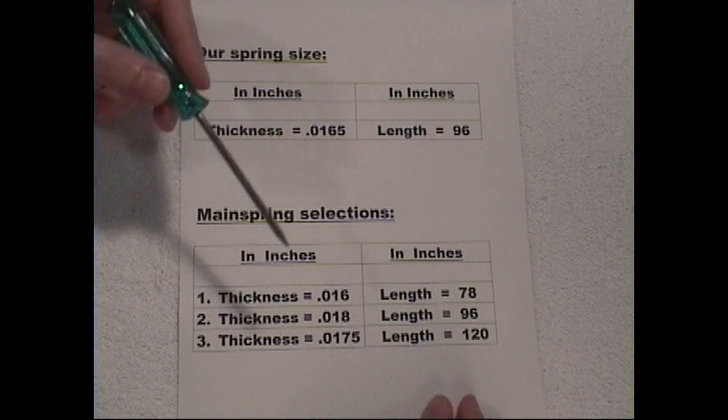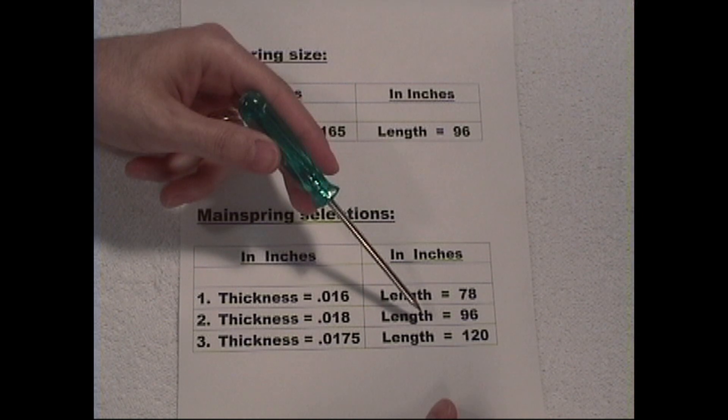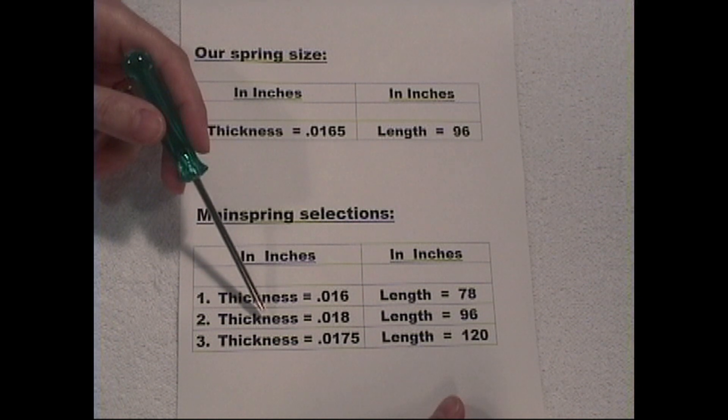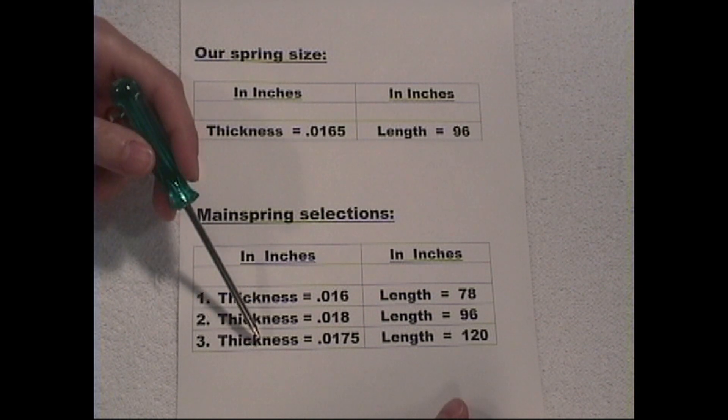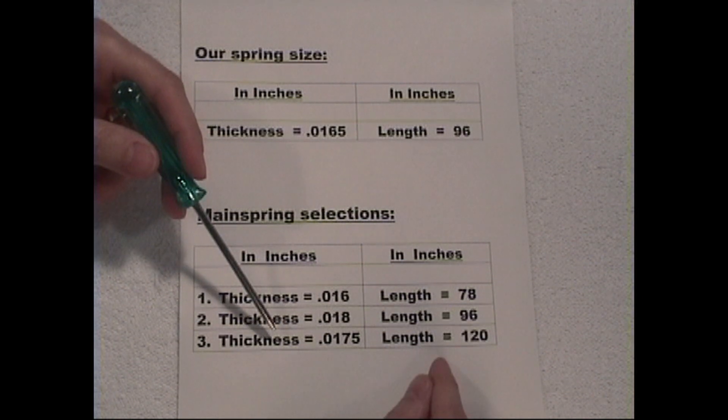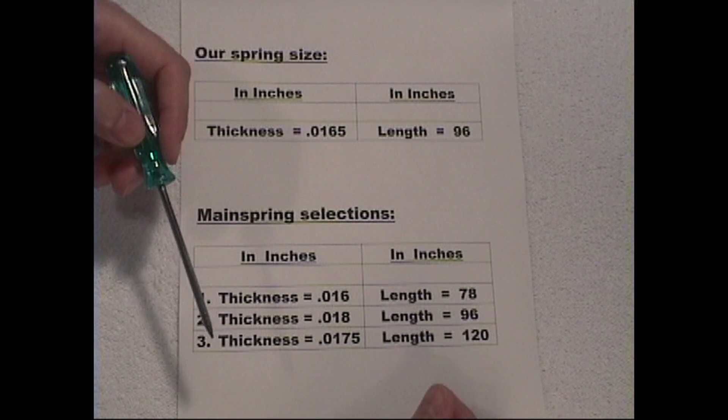Now we have two others here. Here we do have one that's a ninety-six inch length, but the thickness is eighteen thousandths of an inch. Well it's thicker, but is that going to be acceptable? That's what we're going to need to figure out. Then here's another one that's thicker, but not quite as thick as this one, but it's longer. So what do we do in that case?